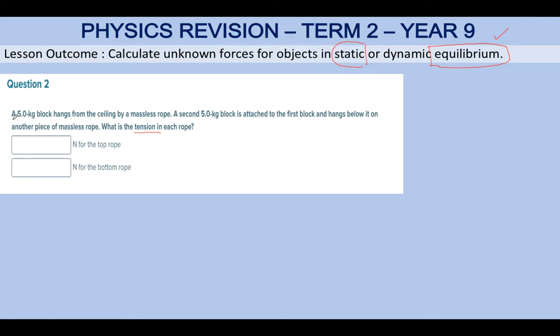Let's look into the question. A 5 kg block hangs from the ceiling by a massless rope. Why massless? So you ignore the mass of the rope. You have one 5 kg block hanging from the ceiling, and a second 5 kg block is attached to the first, hanging below with another massless rope.